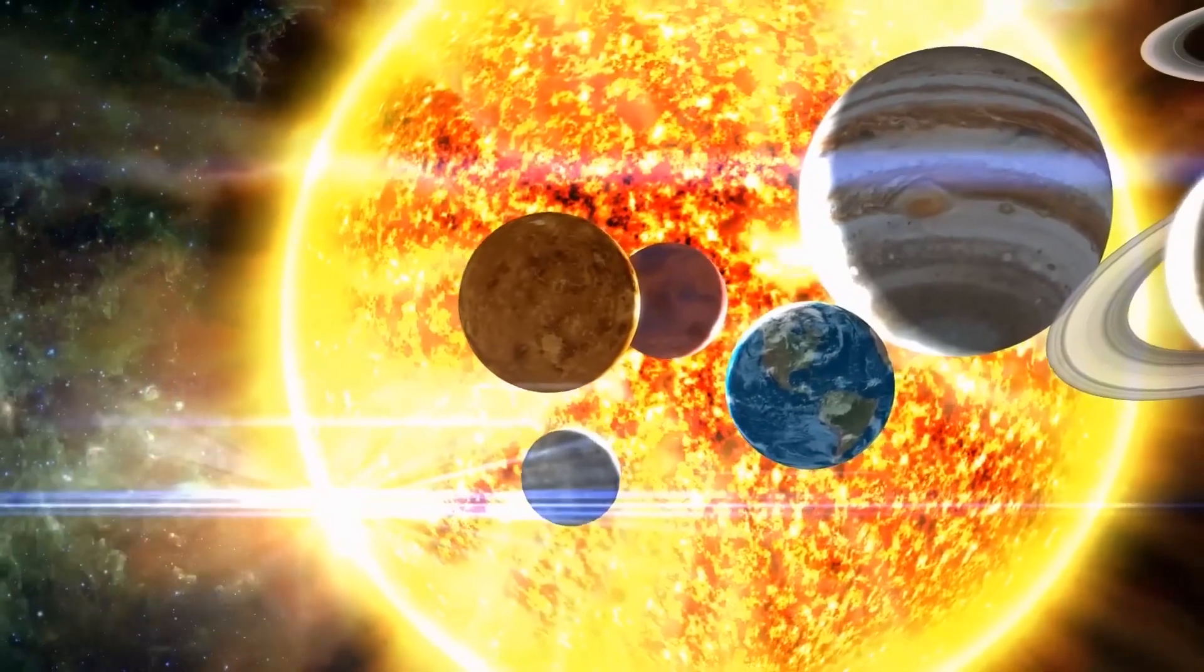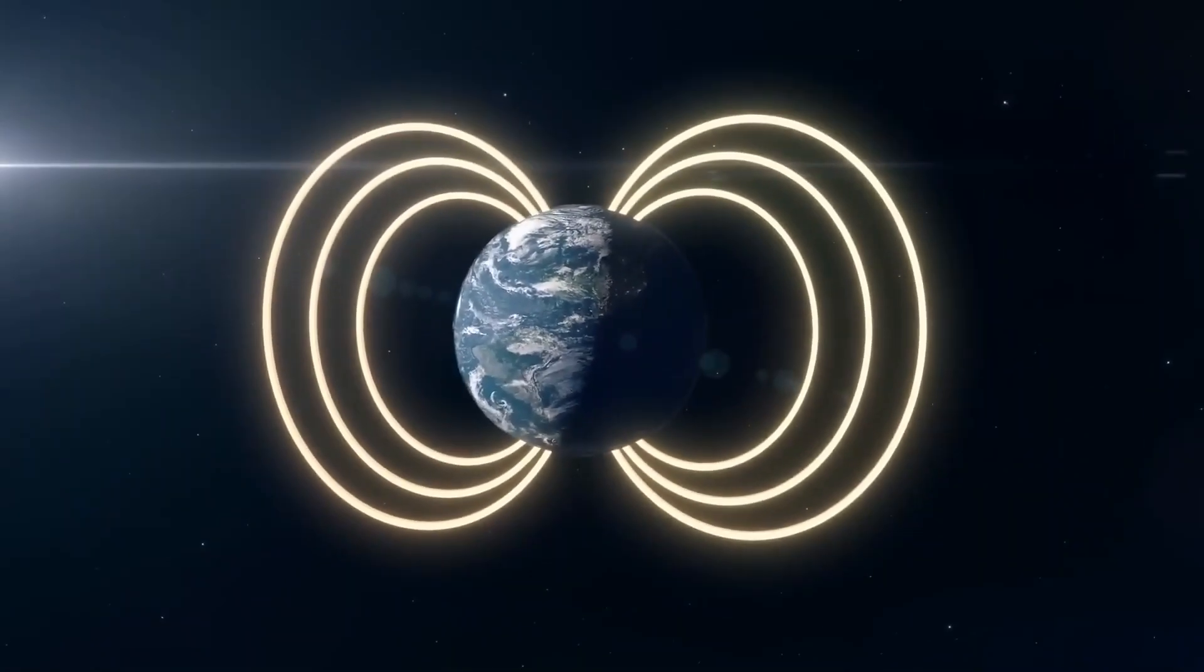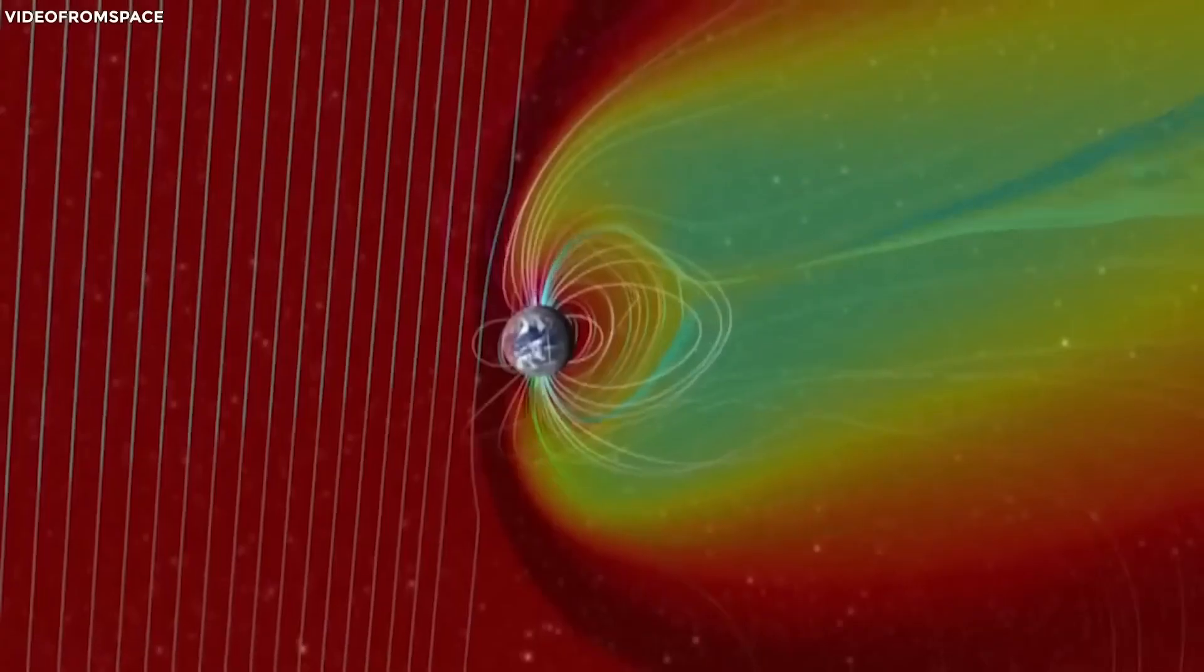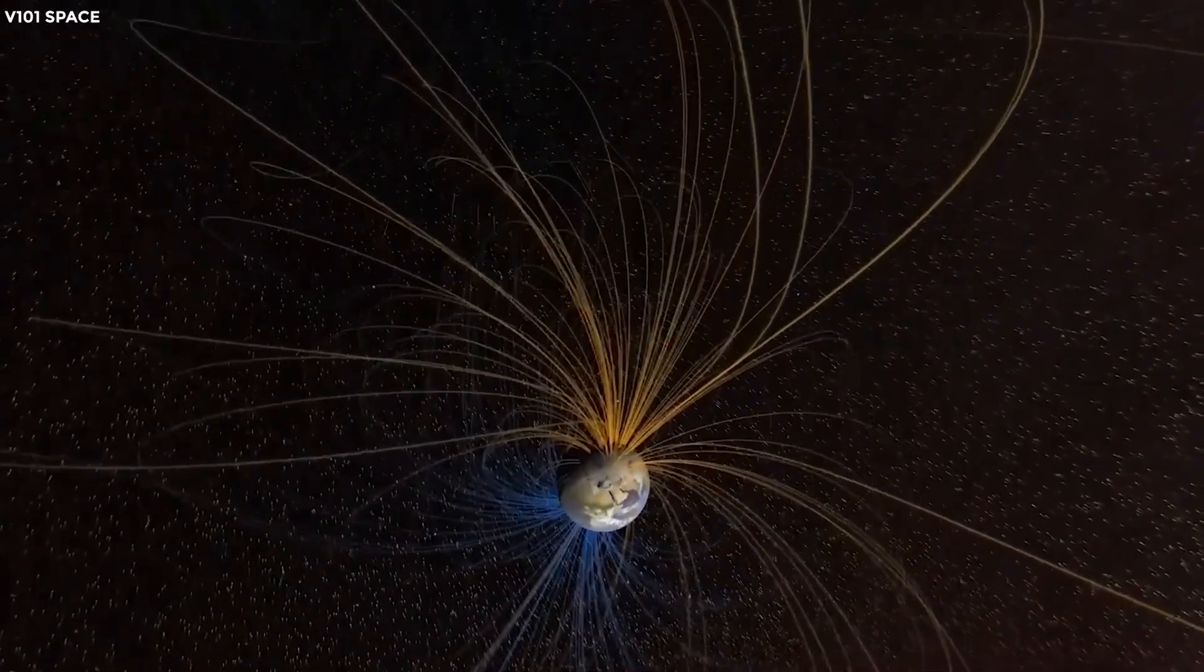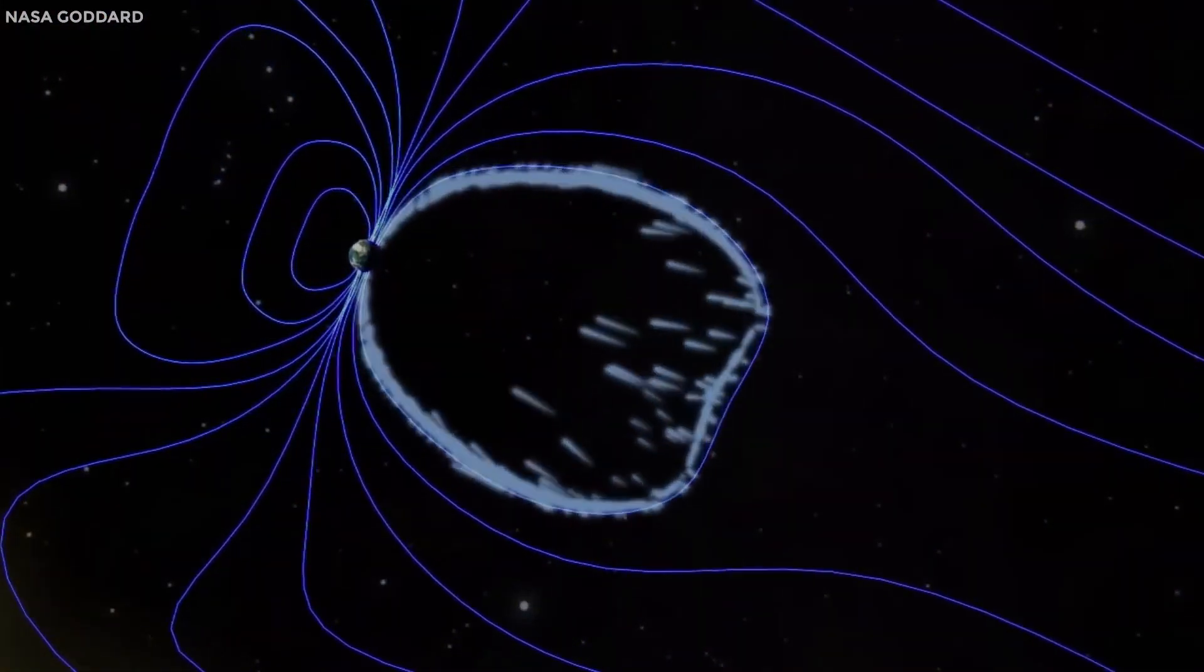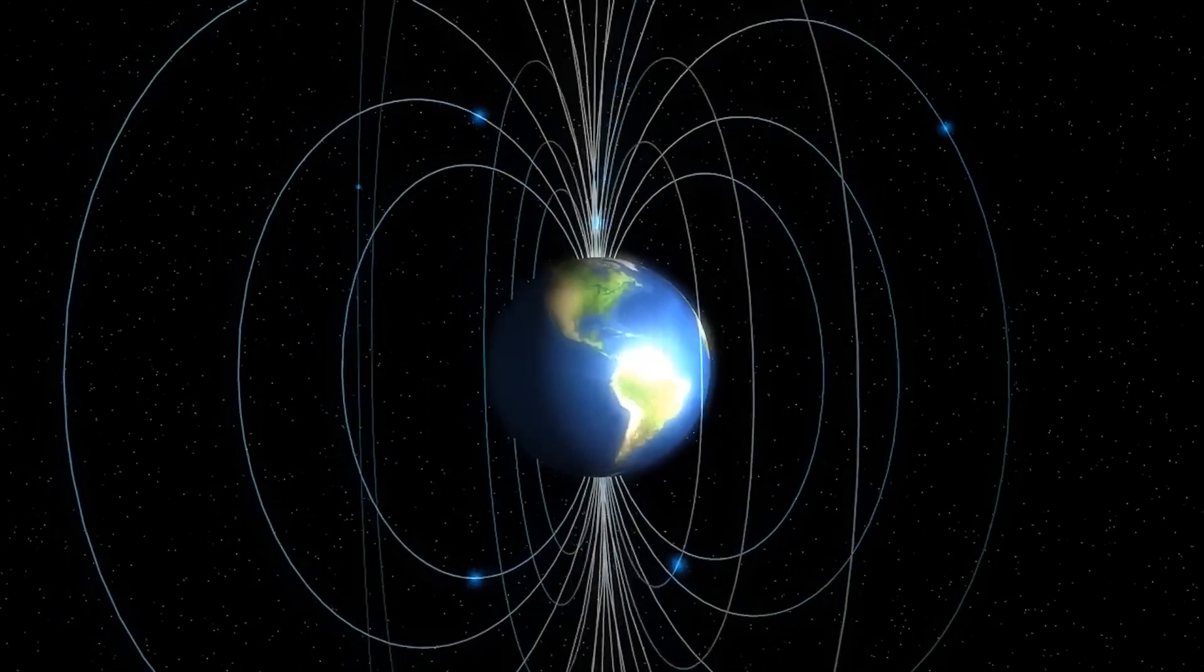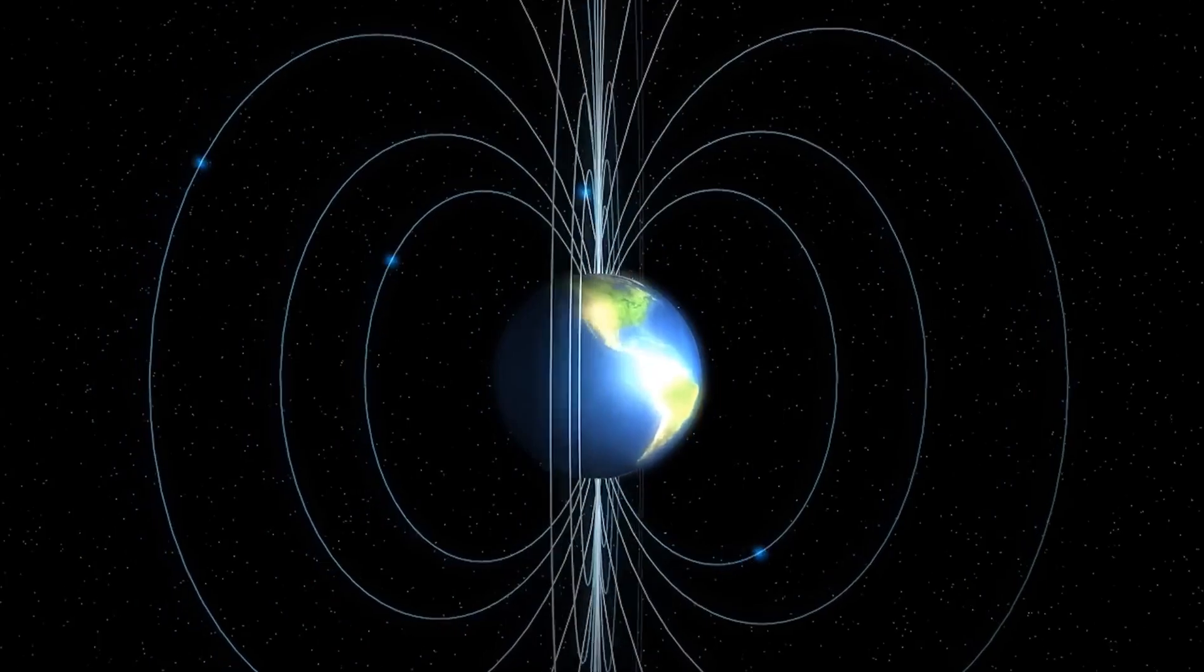This heightened solar activity, combined with the pre-existing crack in the Earth's magnetic field, created a unique situation. Normally, our planet's magnetic field acts as a shield, redirecting the solar wind and the charged particles of solar flares and CMEs around the Earth. But the crack in the magnetic field allowed a larger than usual amount of these charged particles to enter the Earth's atmosphere.